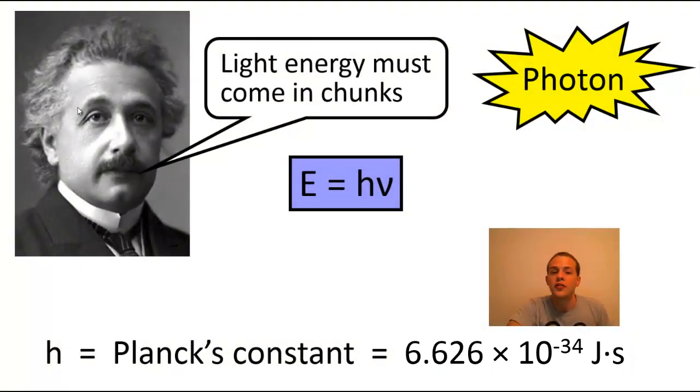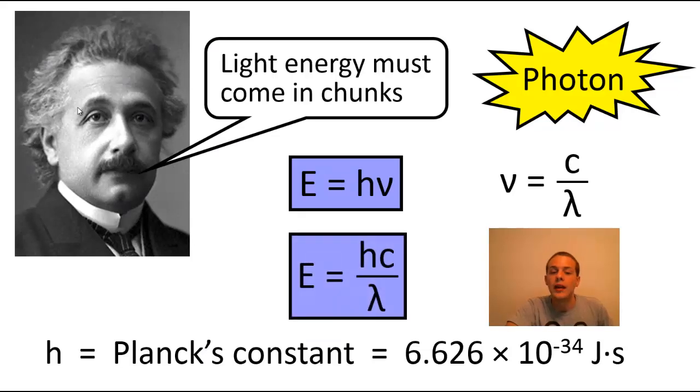If we wanted to express the energy in terms of the wavelength of the light, we can do that fairly easily. We know from a previous video that nu, the frequency, equals c, the speed of light, over lambda, the wavelength. And so if we substitute that expression for nu into this equation, we're going to get E equals hc over lambda. So again, these two equations are just two different ways of expressing the same thing, either expressing the energy in terms of the frequency of the light or in terms of the wavelength of the light.